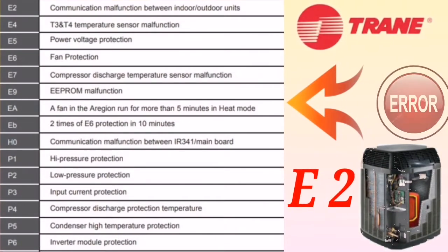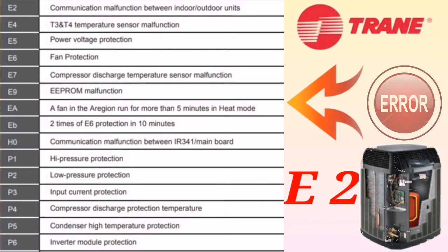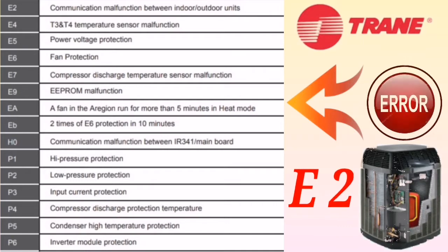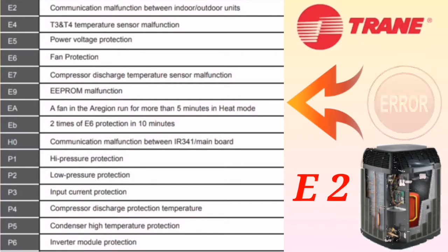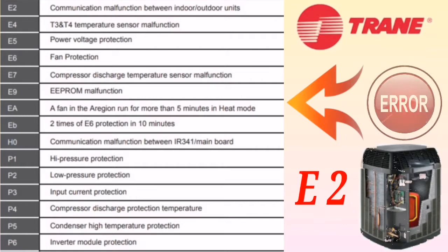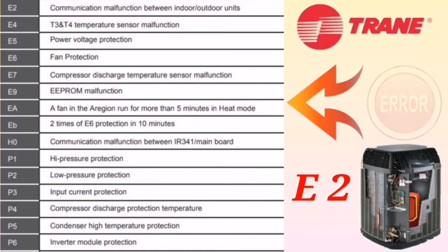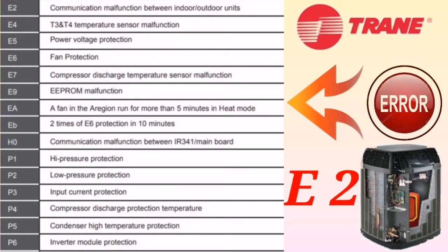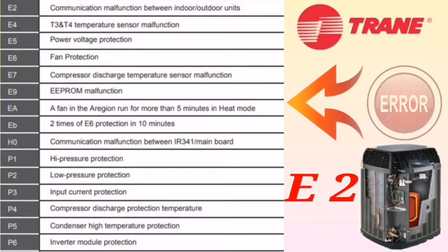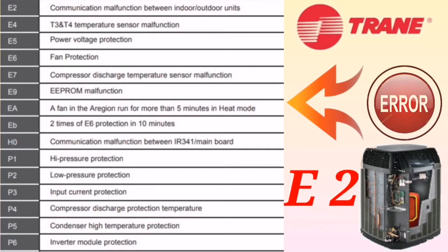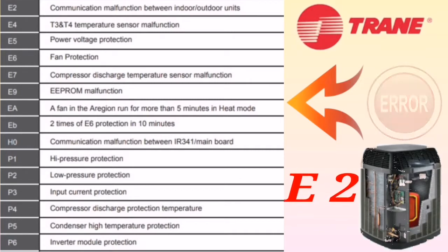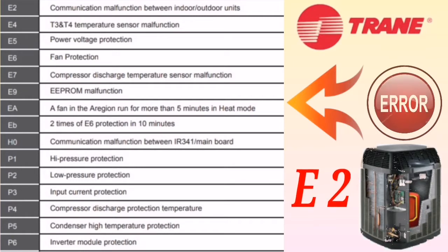The first error code is E2, which means communication malfunctioning between indoor and outdoor unit. First, check the communication cable between indoor and outdoor — if it is broken or loosely connected, reconnect it properly. If the problem persists, remove the communication cable from the outdoor unit, start the indoor unit, and check the communication cable voltage, which should be between 13 to 24 volts. If it is not in that range, the indoor PCB is faulty and needs to be changed. Similarly, if the outdoor PCB is not giving 13 to 24 volts, the outdoor PCB needs to be replaced.